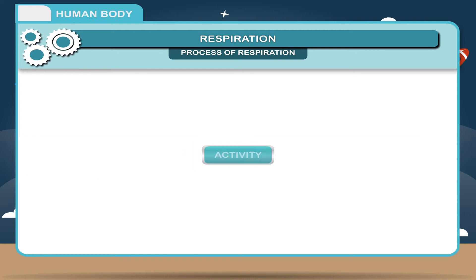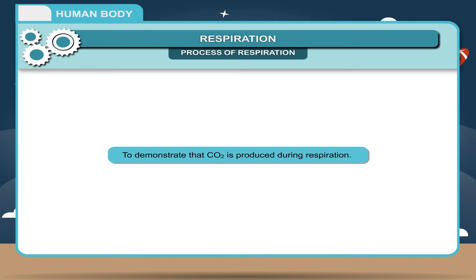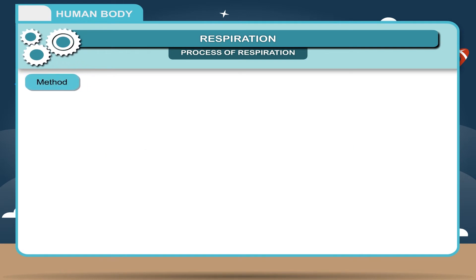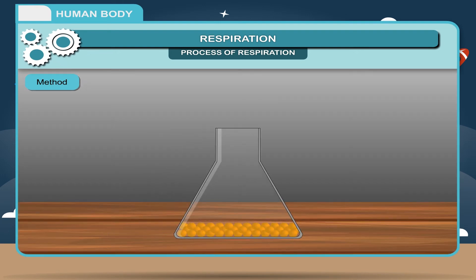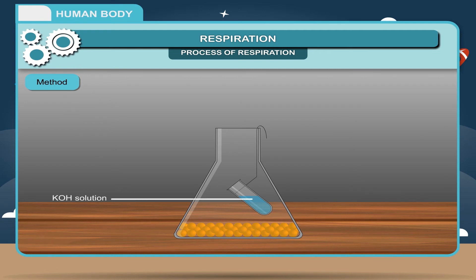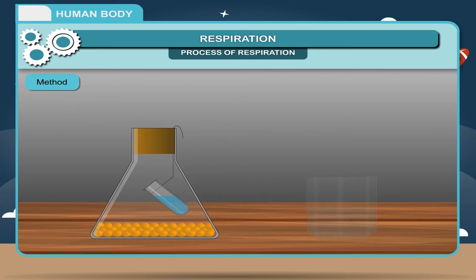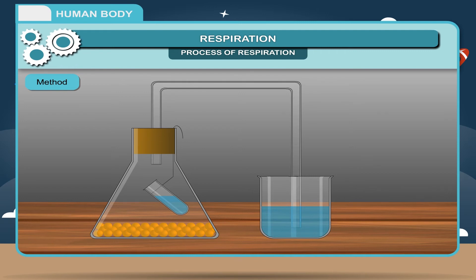Activity — To demonstrate that carbon dioxide is produced during respiration: Take a flask containing some germinating seeds. Put a test tube inside the flask containing KOH solution. A tube is fitted in the flask as shown in figure 3.7. The second end of this tube is kept in a beaker containing water. Make it airtight.